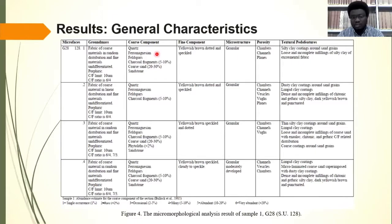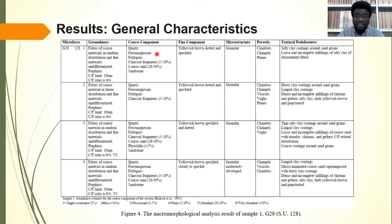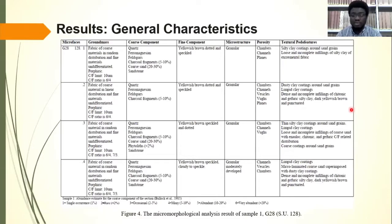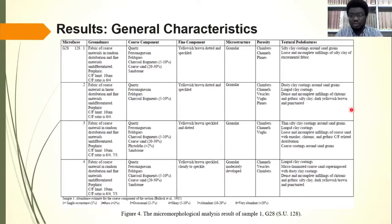Under the fine components, we identified yellow, orange, brown, dotted, and speckled materials. We also identified microstructure, which was either granular or moderately granular. Under porosity, we identified various types — chambers, channels, and planes. Most importantly, the textural pedofeatures session revealed activities that actually occurred on the site: citric clay coatings around sand grains, infillings of citric clay with excremental fabrics, dusty clay coatings, and limpid clay coatings.